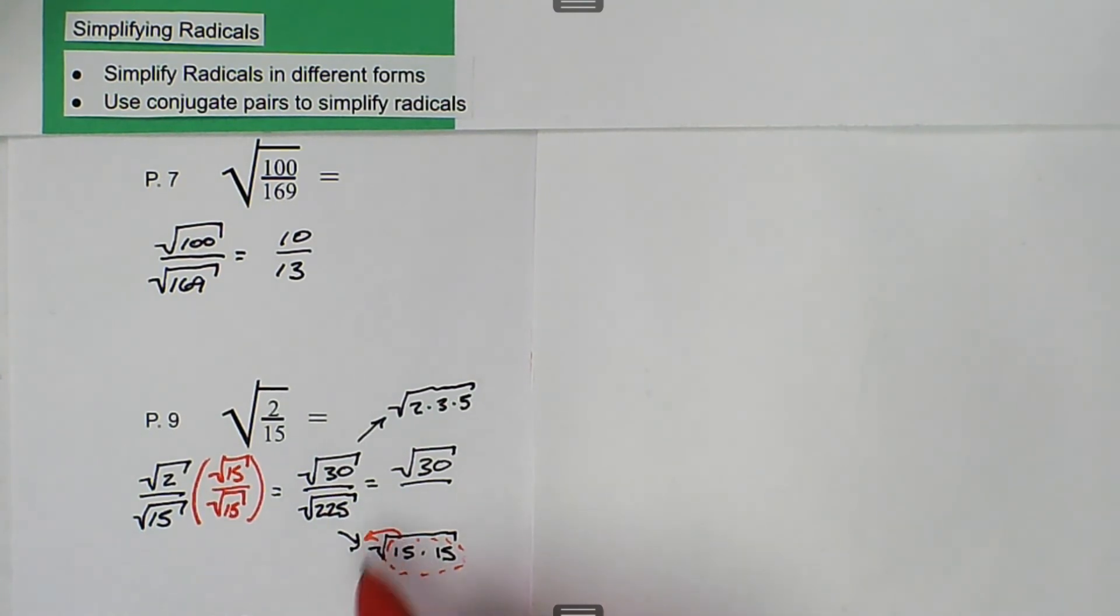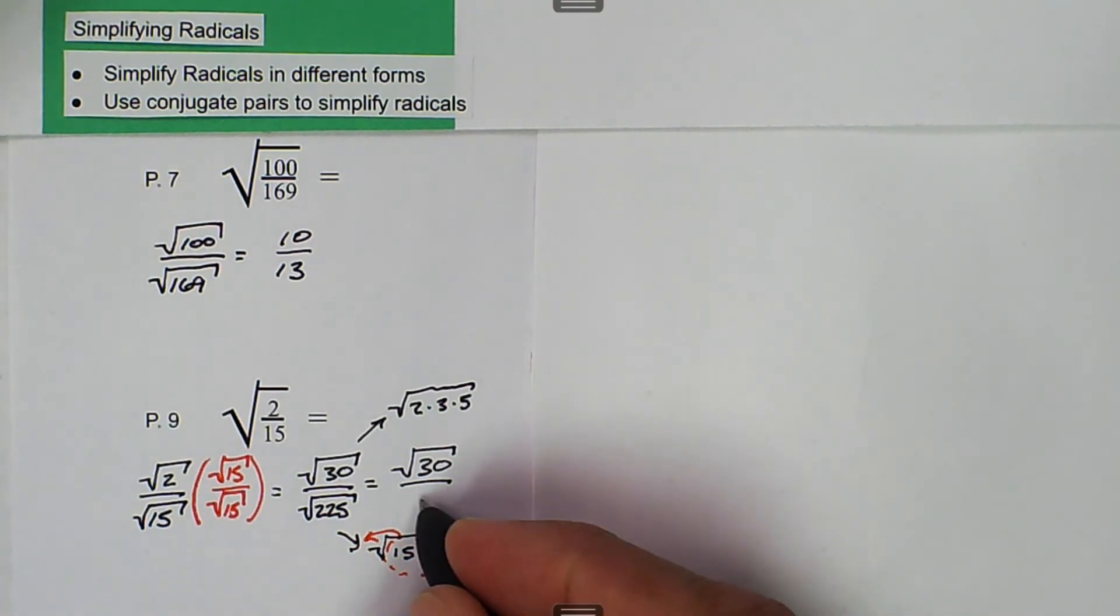So we can take those out front of the radical. There's nothing left underneath, and the final answer for this one is the square root of 30 over 15.